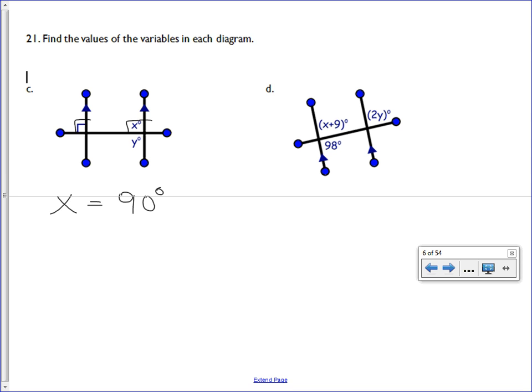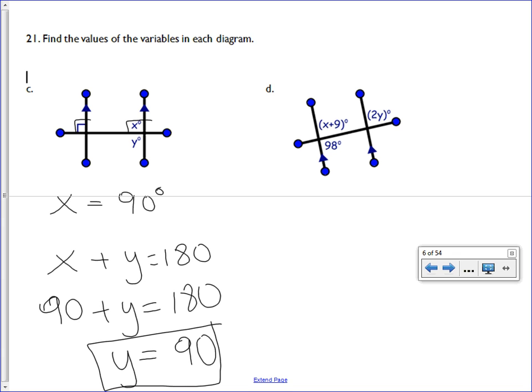What's true about X and Y? If you add X plus Y together, you get 180 degrees. So we now know that X is 90 degrees. So what does Y have to be so that the two added together gives you 180 degrees? And the answer is 90 degrees. So we're done with 21, C.